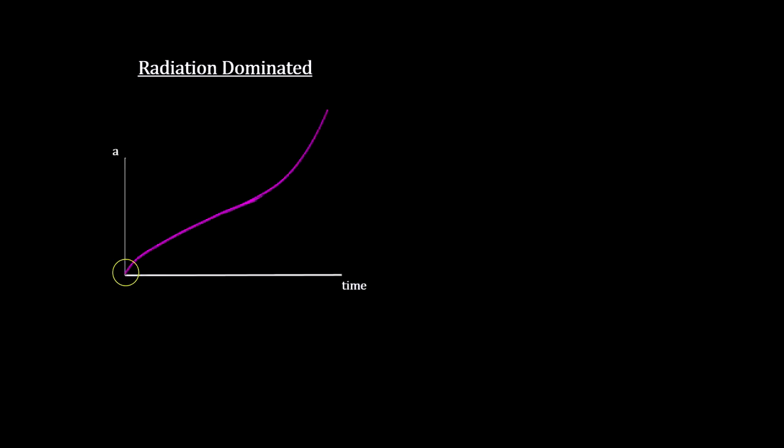In these earliest times, the universe was radiation dominated, and we have a fairly simple relationship between time, scale factor, temperature, and energy, that we can use as we cover each of these key areas.